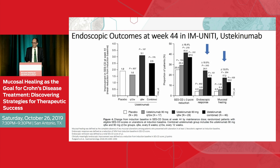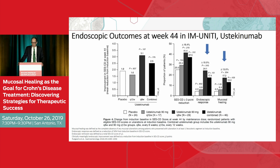Ustekinumab — the newest in terms of Crohn's disease — and as you know, ustekinumab was just approved for ulcerative colitis. These are the data in Crohn's disease showing endoscopic outcomes at week 44 in the UNIFI study with ustekinumab. You can see there was a significant difference in terms of endoscopic response and mucosal healing — the two blue arrows on the right-hand side — statistically better than placebo.